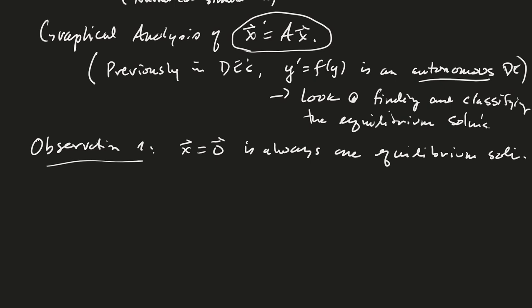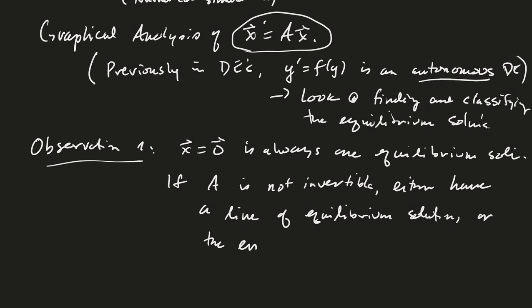Well, you would set ax equal to zero. And if there's more than one solution to ax equal zero, that means the null space of A is more than the zero matrix. And so if A is not invertible, then typically you would either have a line of equilibrium solutions, or I guess if A is a two by two matrix, it's either a line or the entire plane.